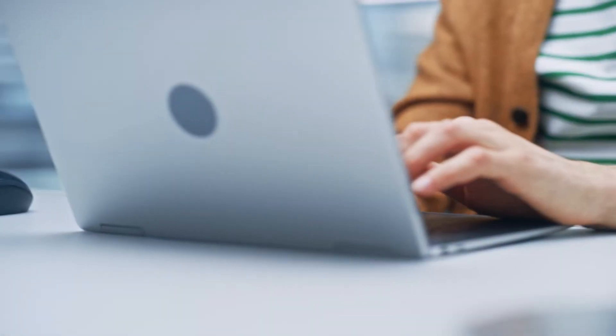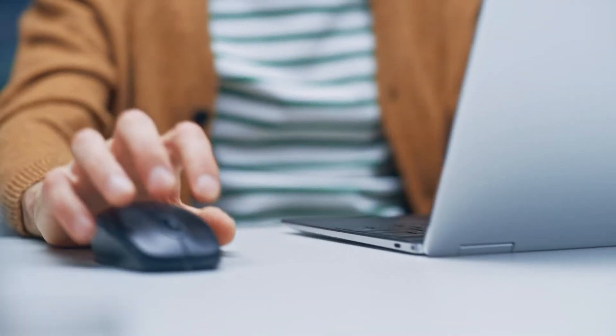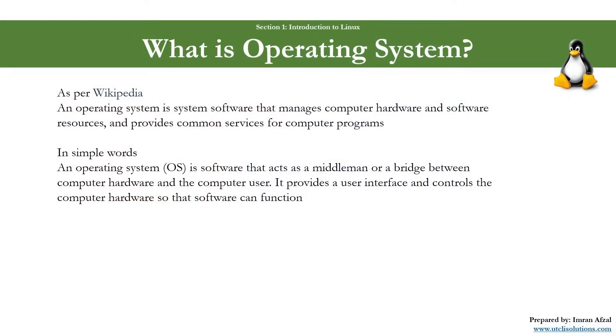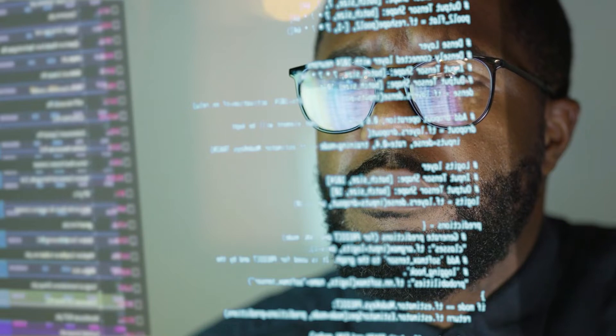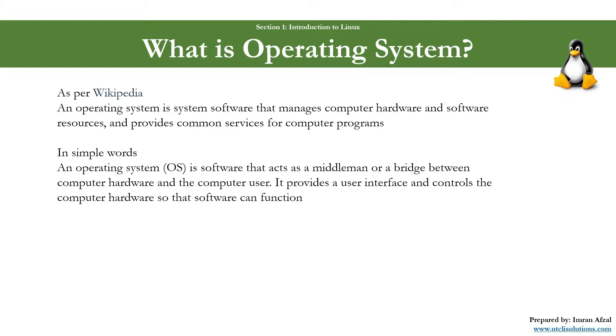In simple words, an operating system — in short, OS — is software that acts as a middleman or a bridge between computer hardware and the computer users. The hardware includes things like CPU, memory, and disks, and you are the computer users. It provides a user interface and controls the computer hardware so that software can function — software or applications that actually run on your computer.